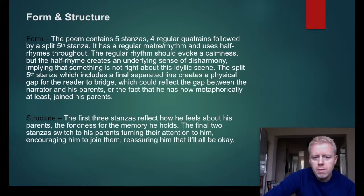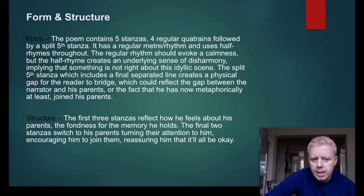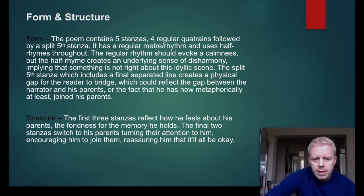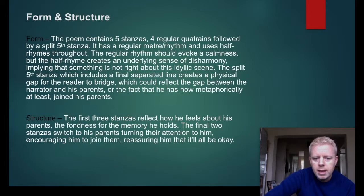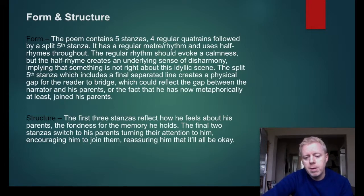The poem contains five stanzas — four regular quatrains followed by a split fifth stanza. It is a regular metre rhythm and uses half rhymes throughout. The regular rhythm should evoke a calmness, but the half rhyme creates an underlying sense of disharmony, implying that something is not right about this idyllic scene. The split fifth stanza, which includes a final separated line, creates a physical gap for the reader to bridge, which could reflect the gap between the narrator and his parents, or the fact that he has now metaphorically at least joined his parents.